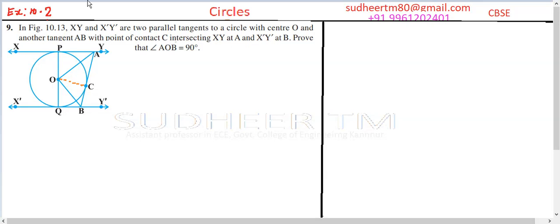Question 9, Exercise 10.2. In figure 10.13, XY and X'Y' are two parallel tangents to a circle with center O, and another tangent AB with point of contact at C intersecting XY at A and X'Y' at B.